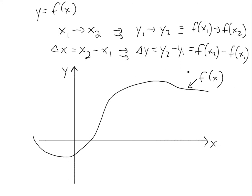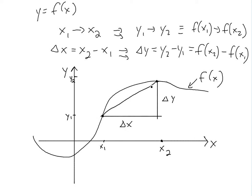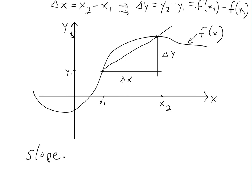To illustrate this further, let's draw a random f of x function. Say you have x1 somewhere here, and you move to x2. Then you have a delta x — you can draw it like this — and then delta y is something like this. From here to here is y2, and this point is y1. So this is our delta y and this is our delta x. If you draw a diagonal line across, this line has a slope, or rise over run. We'll call slope s equals delta y over delta x.